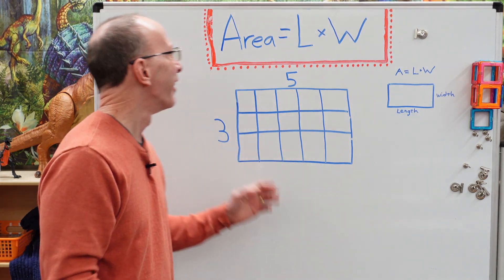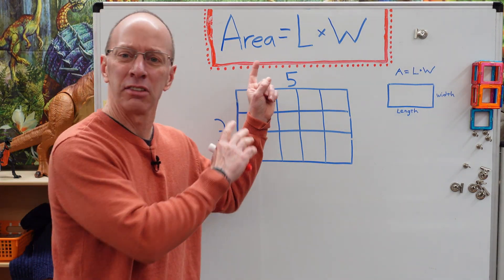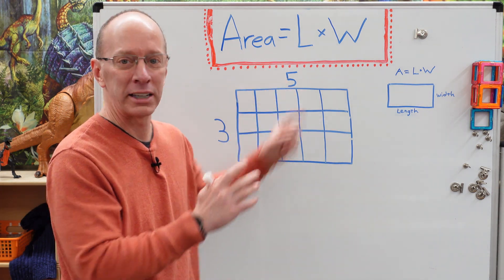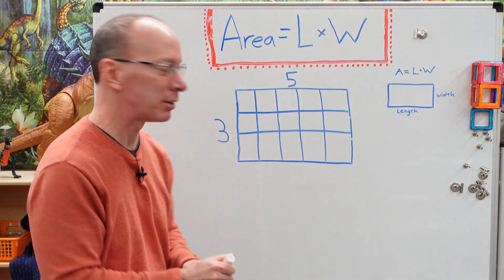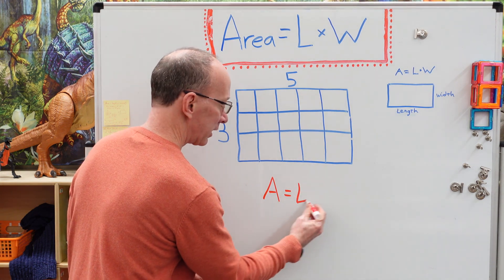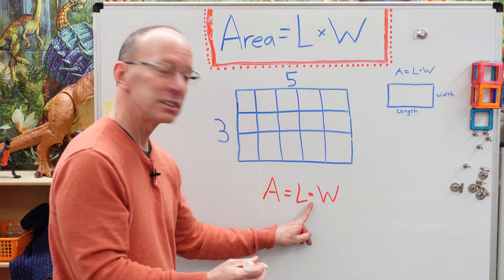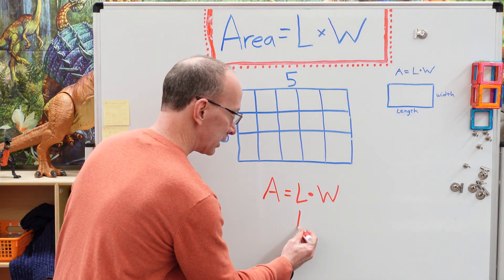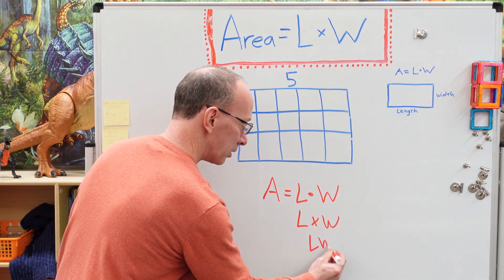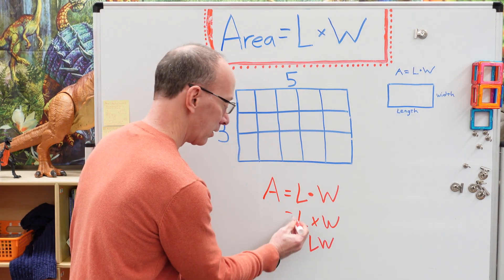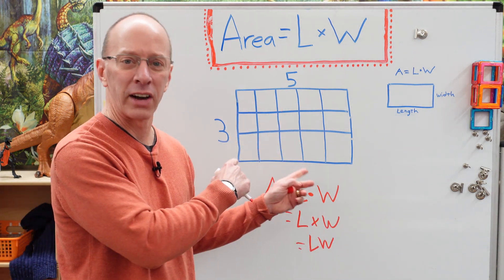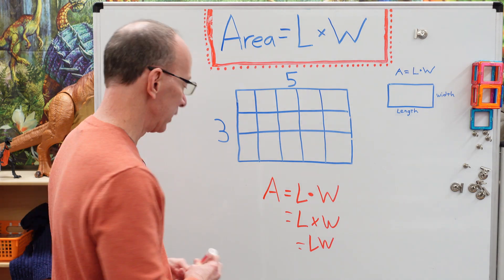All right, back to the show here. Here is the formula we need to use to find what an area of a rectangle is. Now, you might see this written a couple of different ways. You might see A equals length times width. This stands for multiplication. Or you might see it length times width, or just LW together like that. These are different ways on how they write the formula for a rectangle and how to find the area of a rectangle. All right, let's get started here.